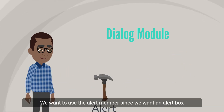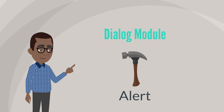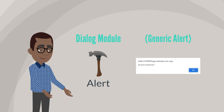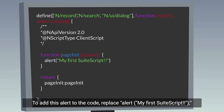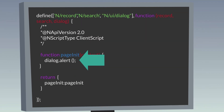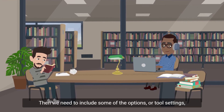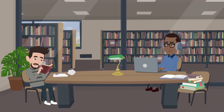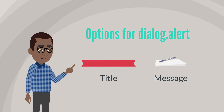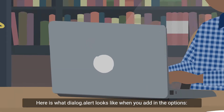We want to use the alert member since we want an alert box that looks like a native NetSuite alert, which is different from the generic alert box we created in the previous video. To add this alert to the code, replace alert with dialog.alert. Then, we need to include some of the options or tool settings inside the parentheses. The main options for dialog.alert are title and message.